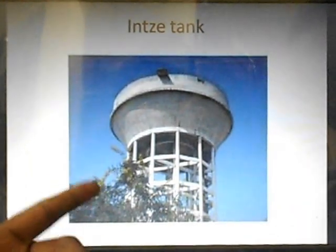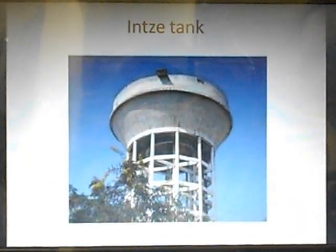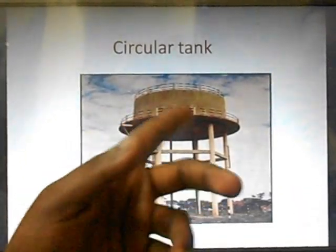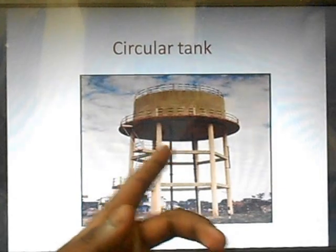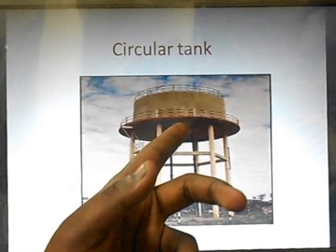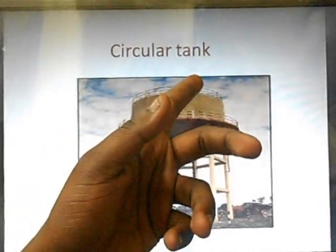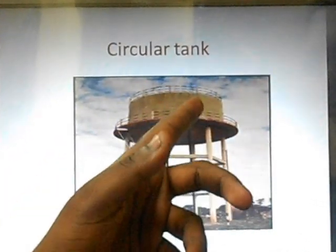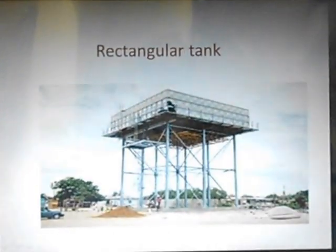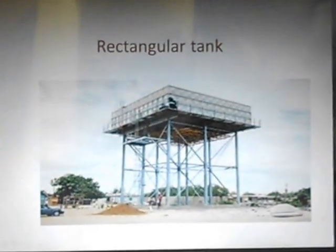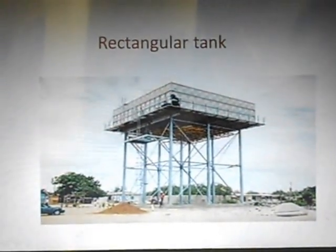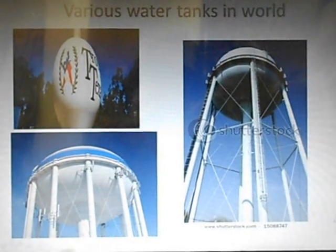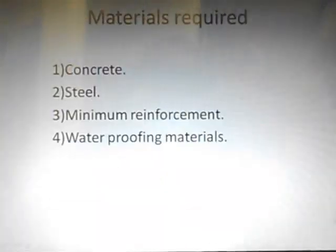Here you can view an Intze tank. These are the circular tanks we are dealing with. These are the columns, these are the brace beams, this is the walkway, this is the railing part, this is the ring beam, and this is the container part. This is a rectangular tank used for small capacities. These are various tanks you can see around the world in various shapes.